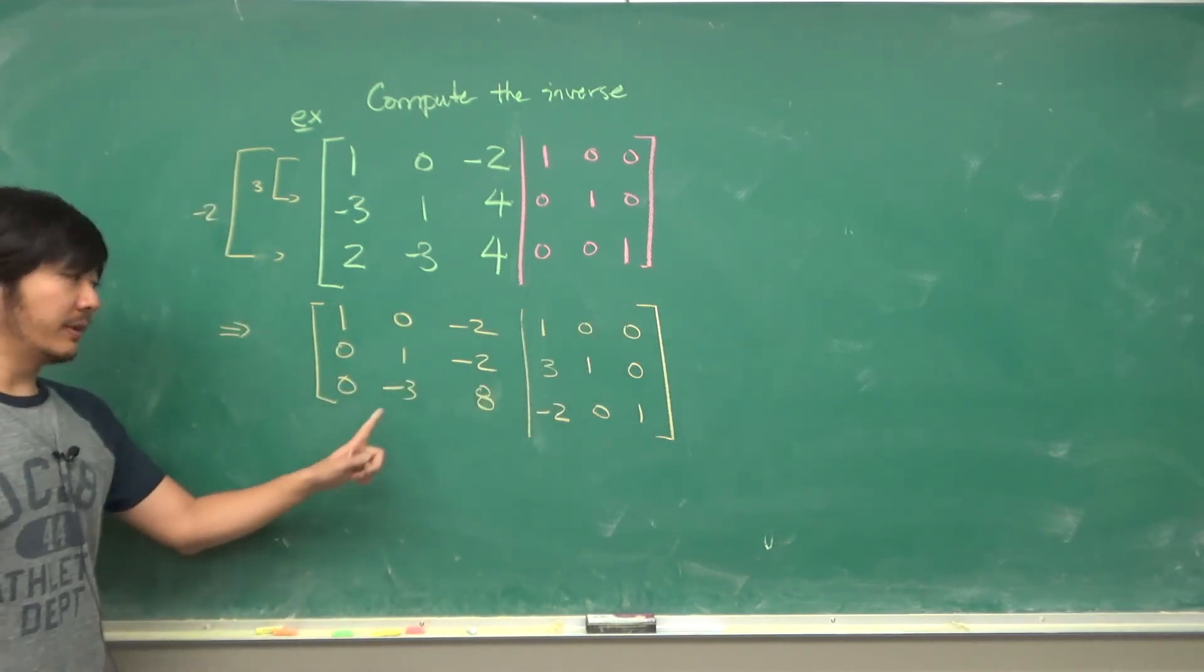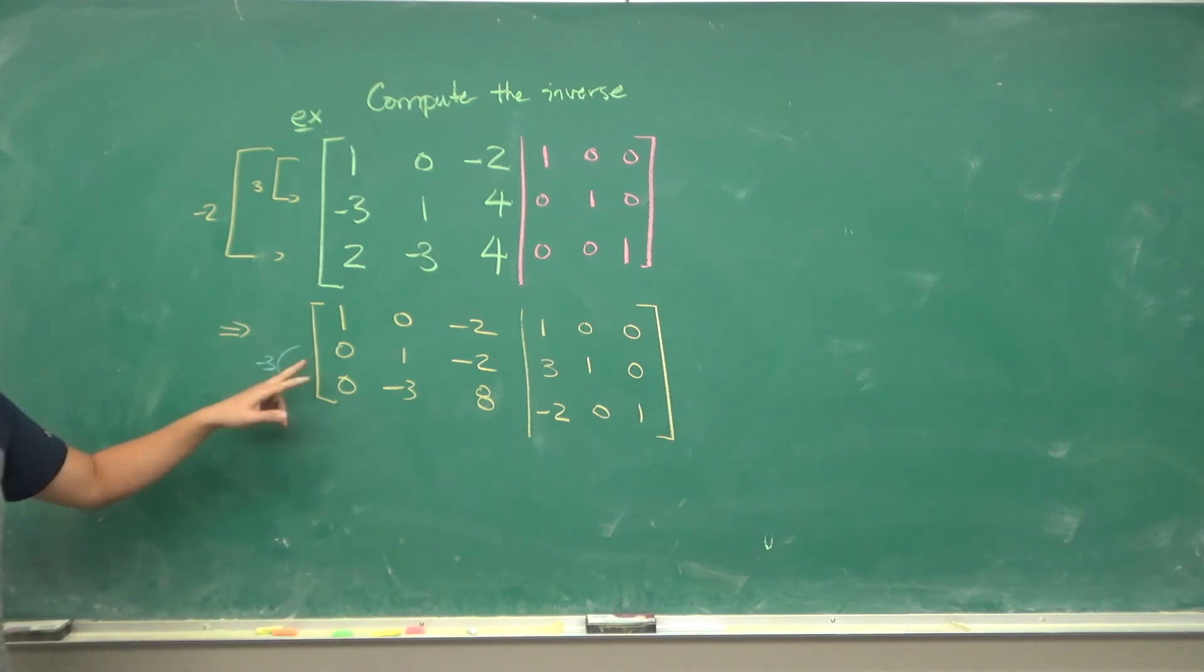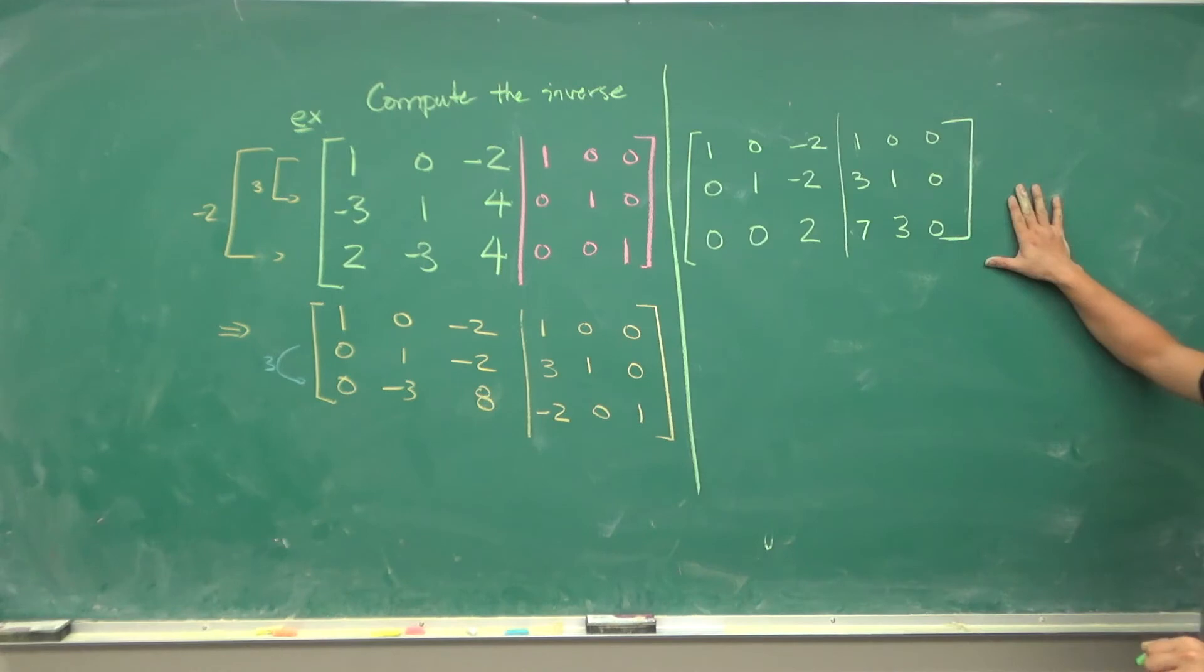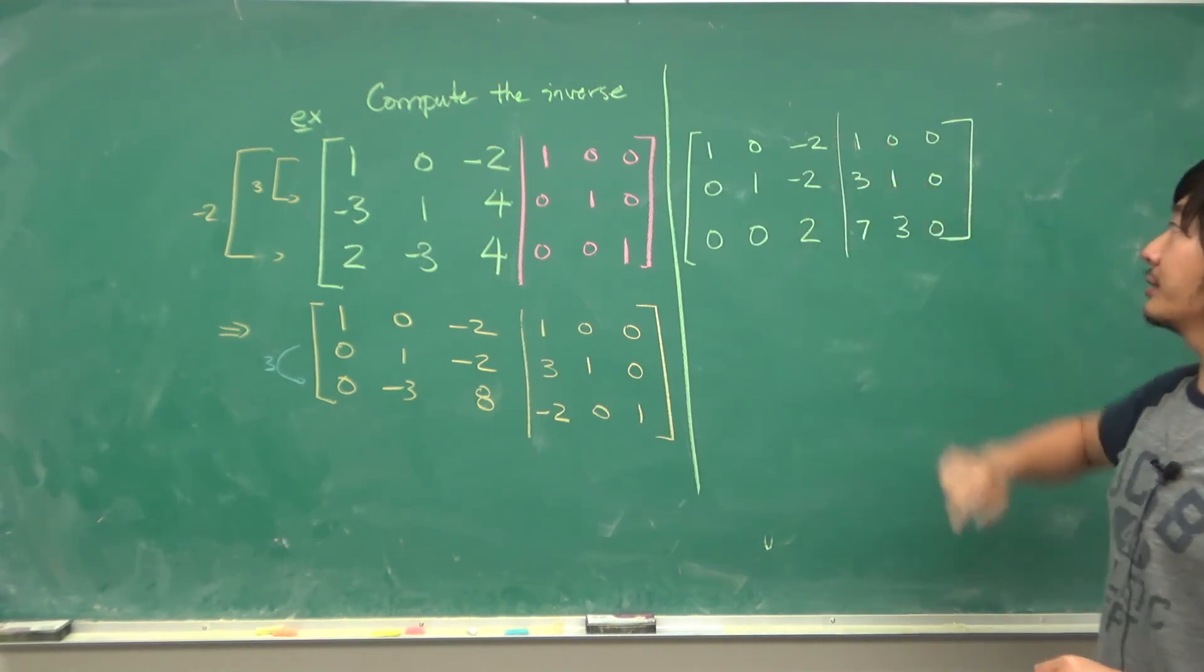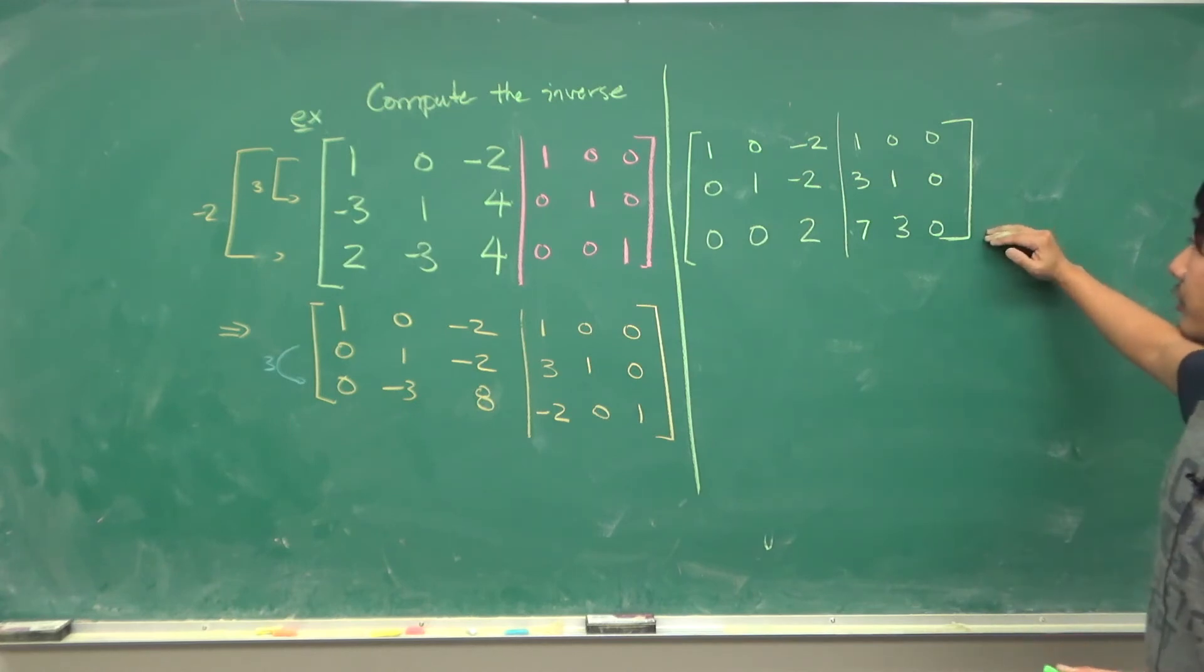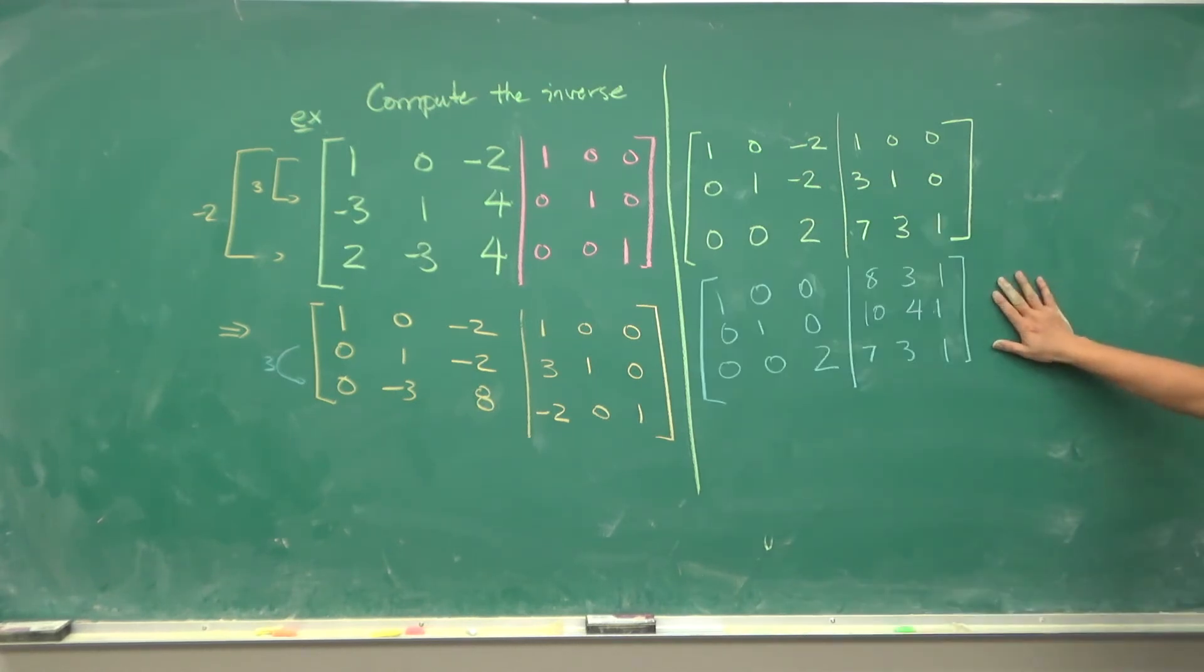In the next step we'll make this 0. 3 times row 2 into row 3 will give you this matrix, and now we want to get rid of these two numbers but we can just add the third row into these two so that we get this matrix, and now we divide this row by 2 so that we get this. And so this side will be the inverse of your original matrix.